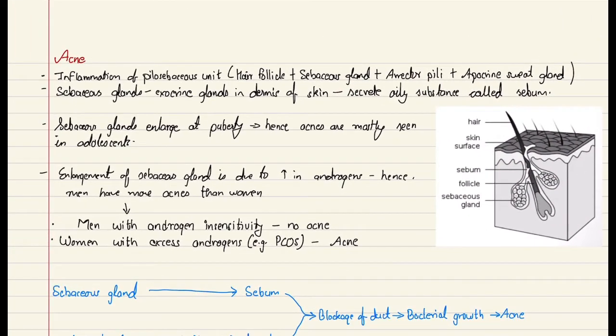The sebaceous glands enlarge at puberty, and hence acnes are mostly seen in adolescence. The reason for the enlargement is due to increase in androgens during puberty. When there is increase in androgens, there is enlargement of the size of the sebaceous gland. When there is increase in the size, there is also increase in the production of the sebum, and this leads to higher chances of the duct getting plugged.